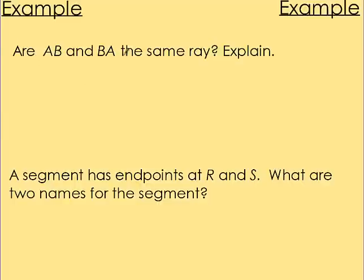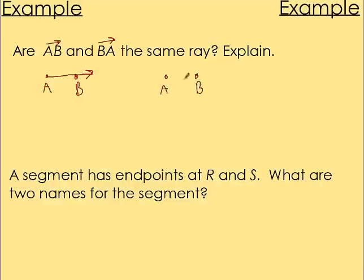Are ray AB and ray BA the same ray? No. Ray AB means the ray starts at A and goes through B and on forever. Ray BA means the ray starts at B and goes through A and on forever. Those are kind of mirrors of each other — they're not the same thing. Draw the diagram and show it: the ray starts at A here, and the ray starts at B there.